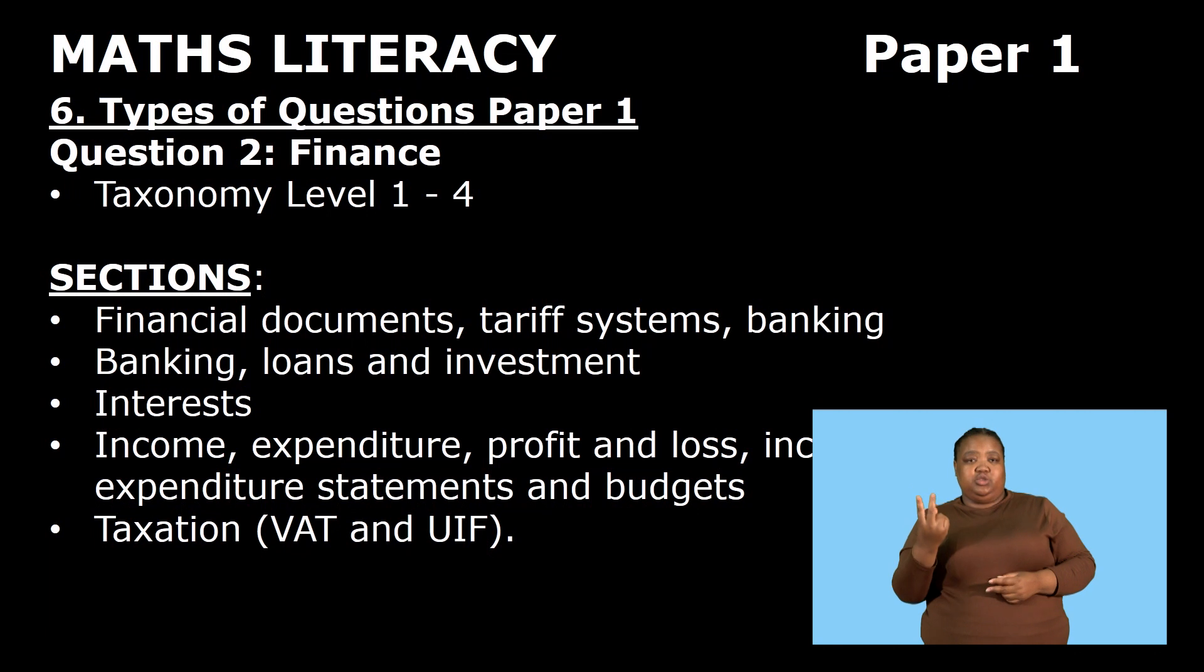For Question 2, looking at finance, the taxonomy level will be level 1 to level 4, and the sections that you could be assessed on will be: